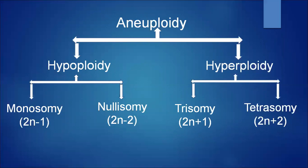In hypoploidy there is a deficiency of chromosomes. In hyperploidy, if an organism contains one or more chromosomes extra to its original complement, they are called hyperploids — there is an addition of one or more chromosomes, indicated by a plus symbol: plus 1 and plus 2.